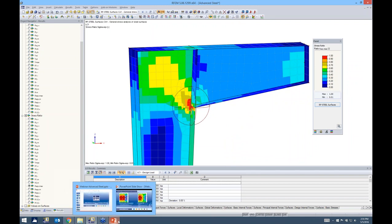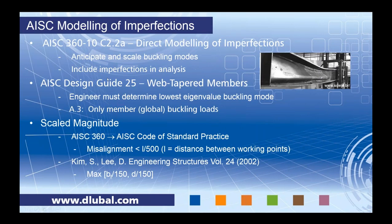Now we want to address imperfections. AISC 360 Chapter C — the Direct Analysis Method — requires accounting for imperfections. Many engineers use notional loads, which is fine on a global level, but for a finite element analysis of a connection, notional loads may not be fully applicable. Section C2.2a allows directly modeling imperfections by scaling buckling modes and including the scaled imperfection in the analysis. Design Guide 25 for web-tapered members also states that the engineer must determine the lowest eigenvalue buckling mode.